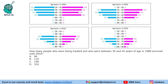The second question: how many people who were being tracked and who were between 30 and 40 years of age in 1980 survived until 2010? From 1980 to 2010 is a gap of 30 years, so these people are now in the age range of 60 to 70 in 2010. That is 90 plus 100, so the number of people is 190.